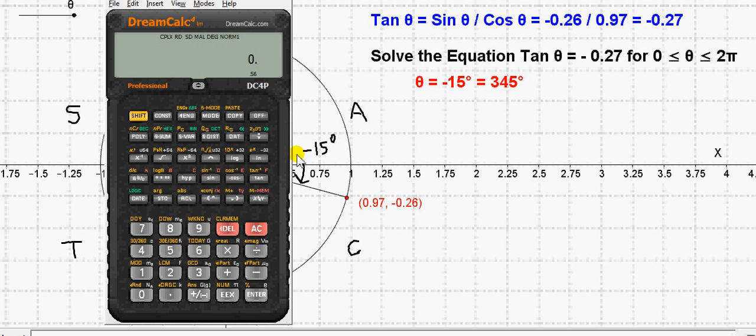And we can check this on the calculator. We've already seen the tan of the negative angle. Let's just see it again. It's actually very close to minus 0.27. This value here to two decimal places is exactly minus 0.27. So this rounding is good enough.